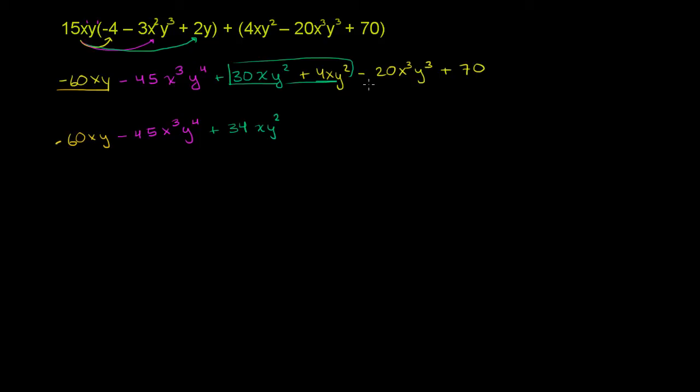And then we have this negative 20x to the third y to the third. Nothing to combine that with. Negative 20x to the third y to the third. And then there's nothing to combine the 70 with, so then we just get plus 70. And we are done.